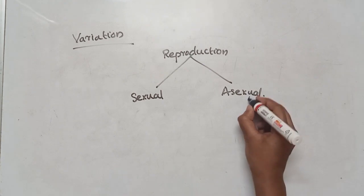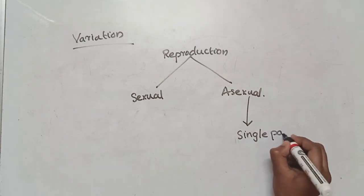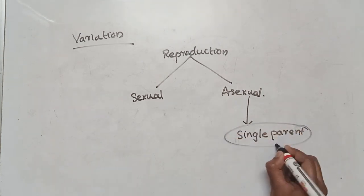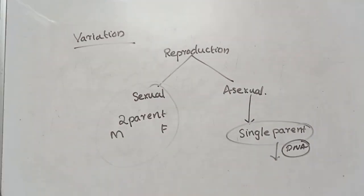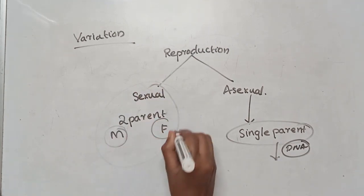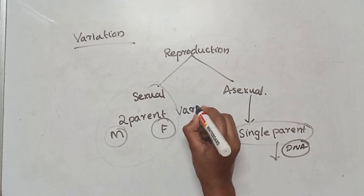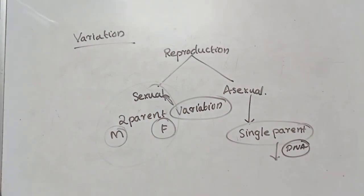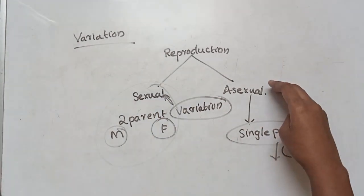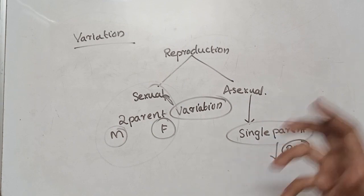In asexual reproduction, there is only one single parent, and they produce offspring. In sexual reproduction, there are two parents producing offspring. In sexual reproduction, there can be various variations. Asexual reproduction, with one parent, tends to produce offspring similar to the parent.